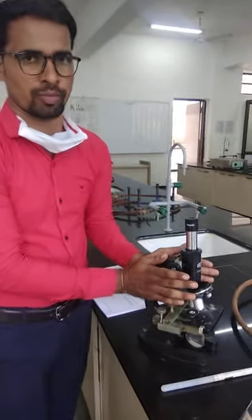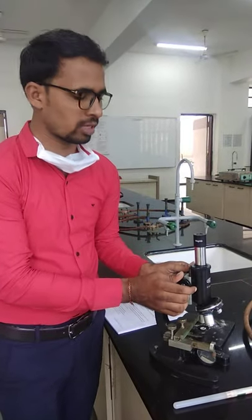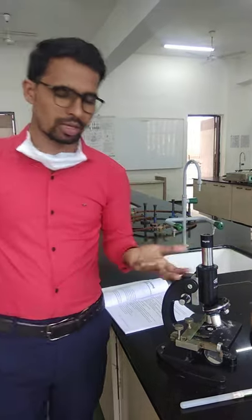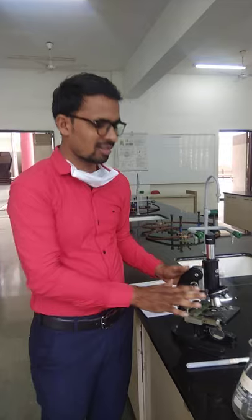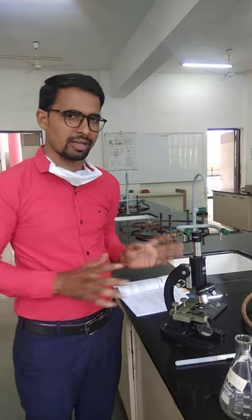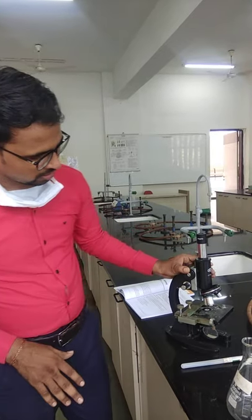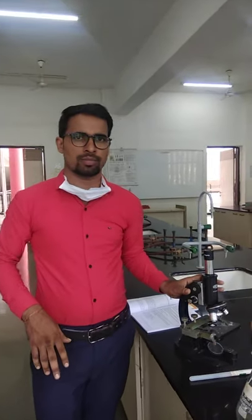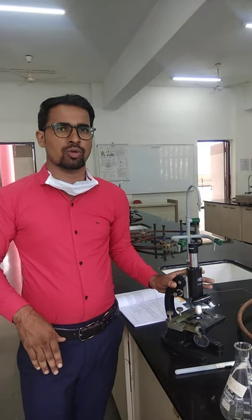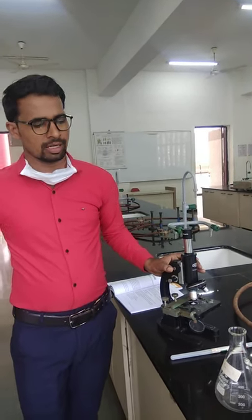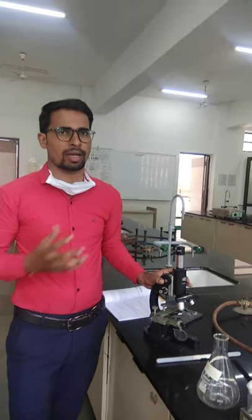Then we have the next instrument which is the microscope — another most important apparatus or instrument used to observe microbes. We already have an idea about the microscope. You can see here the compound microscope. Under this compound microscope we are going to see and study different microbes.